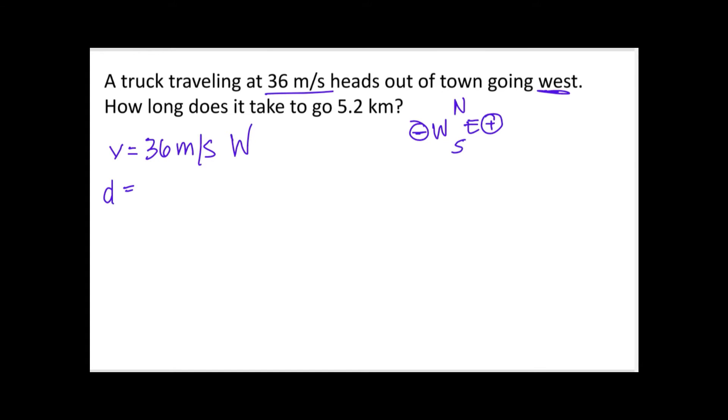And then we've got a distance of 5.2 kilometers, and then we have a time, and that's what we want. So, because our velocity is in meters, we have to convert this kilometers to meters. And I know you can do this in your head, but I tend to make mistakes if I don't do it on paper. A recurring theme, I make mistakes when I don't write stuff down. So I just always write it out.